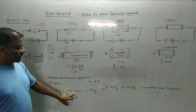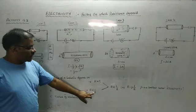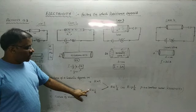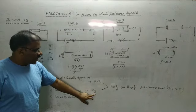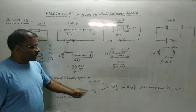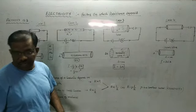Area of cross-section is inversely proportional to resistance. A thick wire has less resistance than a thin wire. If the area of cross-section is more, the resistance is less; if the area of cross-section is less, the resistance to the flow of current is more.